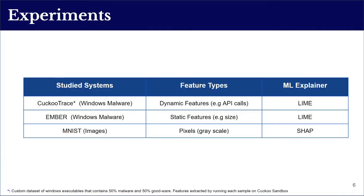We experiment the proposed explanation-guided correlation analysis on three different systems using a total of eight different machine learning models. First, we use Cuckoo Trace, a custom dataset of Windows executables equally composed of malicious and benign files, extracting dynamic features by analyzing runtime behavior using Cuckoo Sandbox. We also use a complementary dataset called EMBER, a benchmark system for malware detection built from static features of one million Windows executables. Finally, we experiment on a convolutional neural network trained on the MNIST dataset for multi-label image classification.